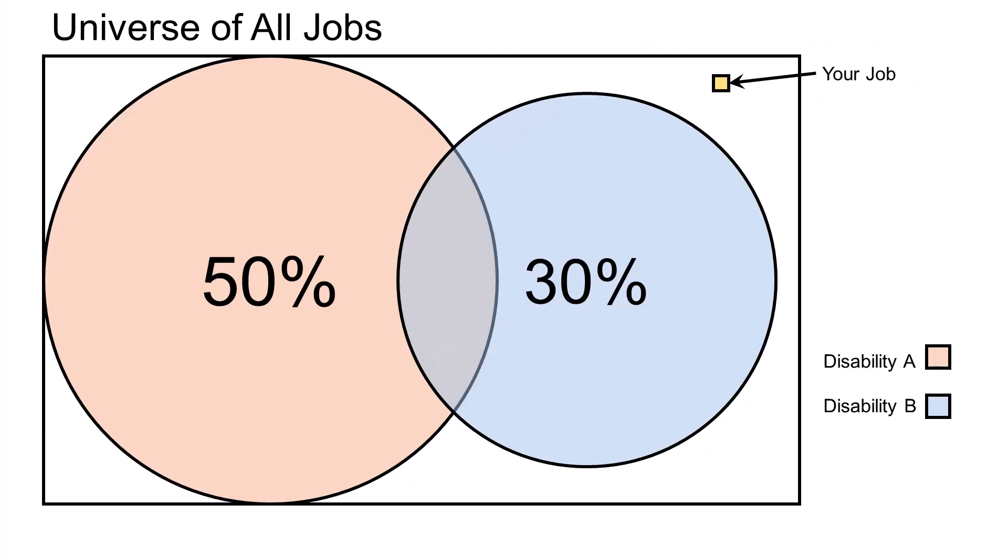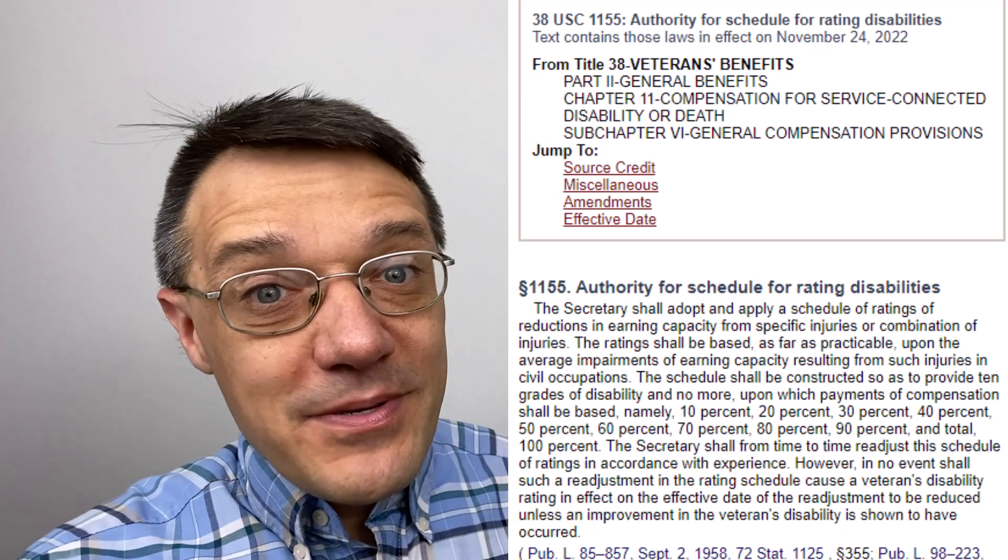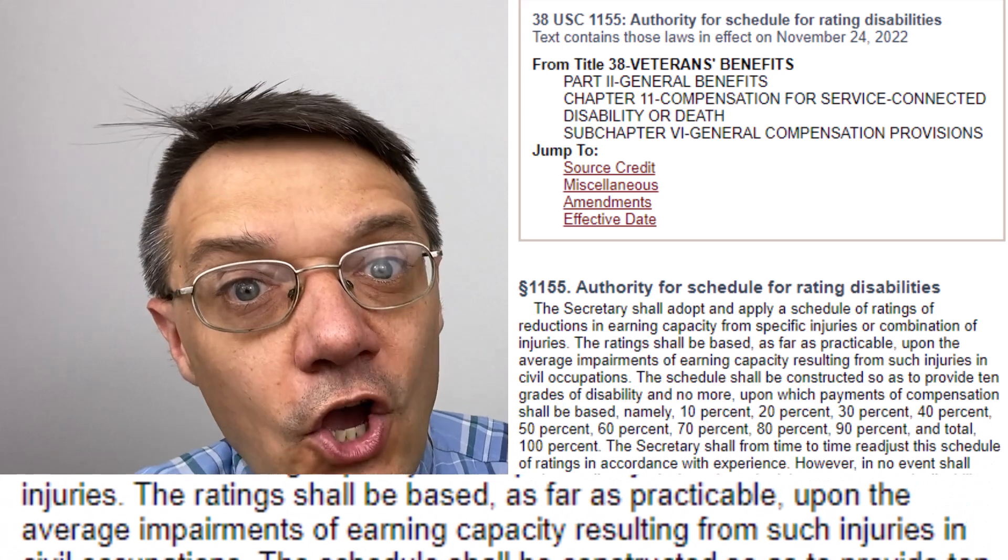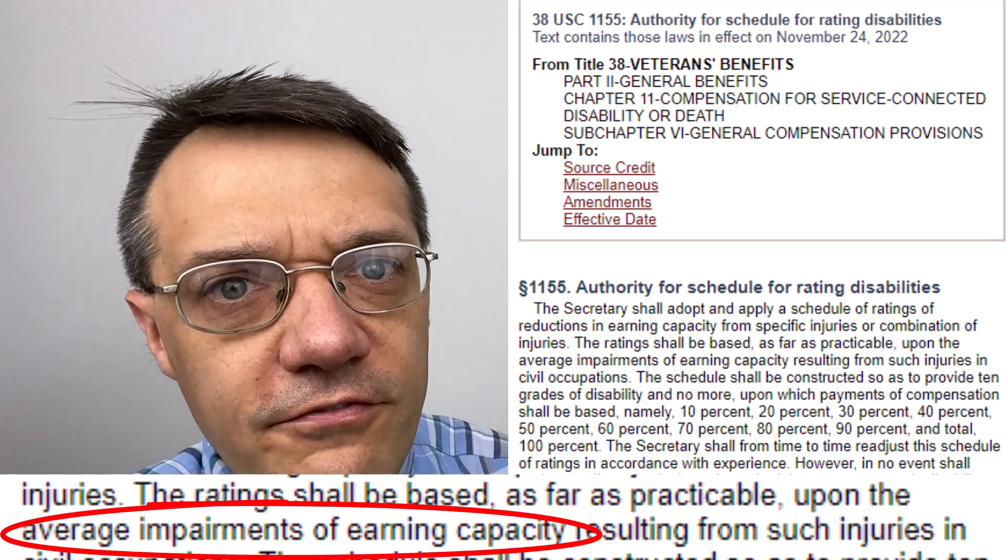It measures the impact on all possible jobs, not necessarily the one that you hold. In fact, US code is specific that ratings are based on the average impairment of earning capacity resulting from the injuries. You see, these ratings are not a description of you. It's just a way for the VA to assign a certain amount of money to specific illnesses or injuries.